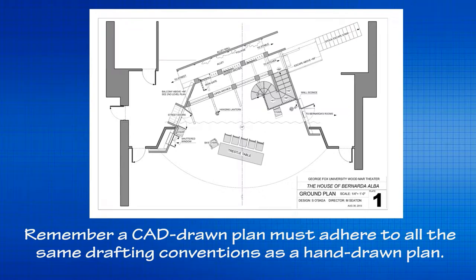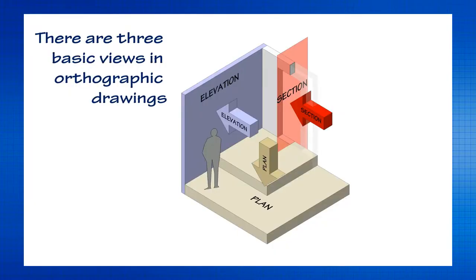There are basically orthographic drawings, and three key sets of drawings we'll be dealing with. Plan views are looking straight down from above at your drawing, like it was a map. Elevation is looking at vertical elements — walls and anything vertical. And a section view is a special drawing where you're cutting through something — creating a cutting plane and then looking at the side of that cutting plane to understand how something is built on the inside.